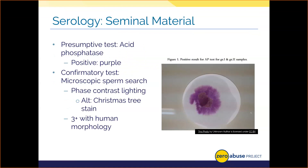Acid phosphatase, or AP, is an enzyme found several times higher in concentration in semen than in other bodily fluids. Because it's so much higher in semen than any others, it gives a very distinct reaction. AP testing isn't confirmatory because it's also present in urine, feces, and vaginal secretions, so we need a confirmatory test to shore up results from a positive AP test.